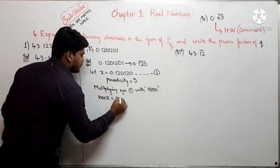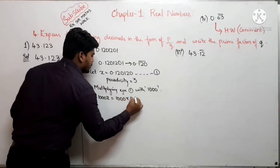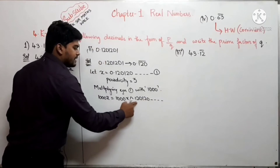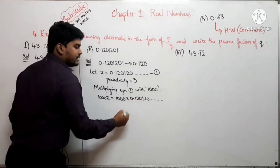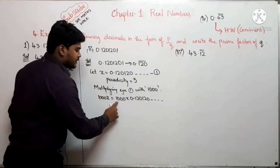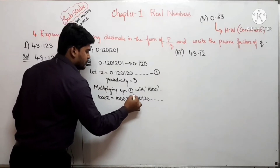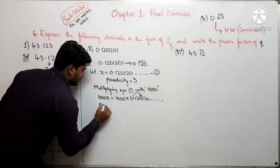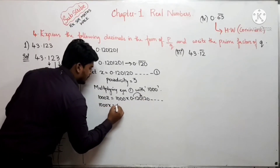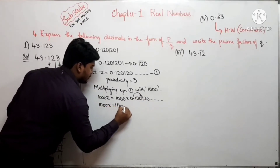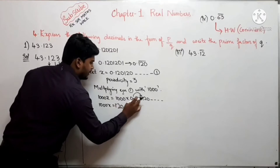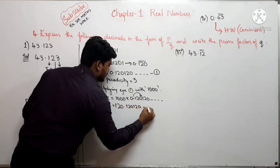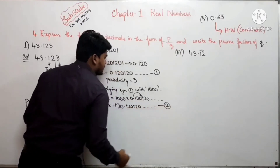1000 × x = 1000 × 0.\(\overline{120}\)। 1000 से multiply होने पर decimal point 3 places आगे jump होगा, तो 1000x = 120.\(\overline{120}\) — यह होगा equation number 2।